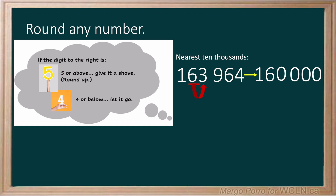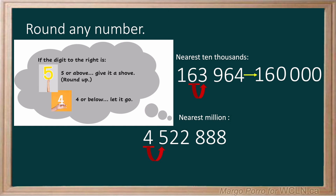You can also use the same rule to round to the nearest million. For this number, we can underline the millions place and look at the digit to the right. Five fits into the give it a shove category — it's a strong number, so it can make the millions change. We change the millions from four to five and the digits after the millions become zeros.